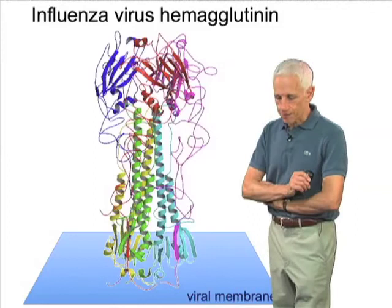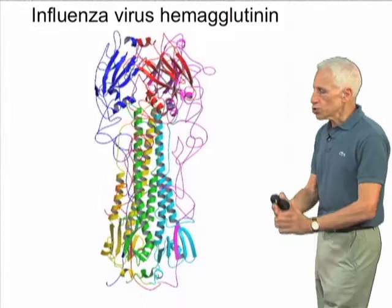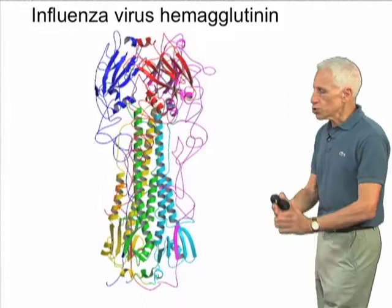Its molecular design doesn't look anything like that of the envelope protein of dengue virus. It's a stalk-like structure, and long alpha helices project the receptor binding site at the top, about 120 or 130 angstroms away from the membrane.